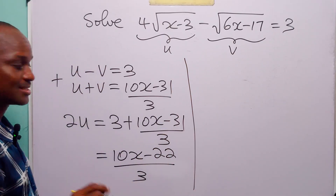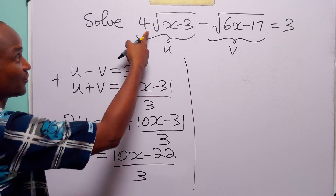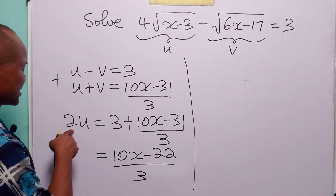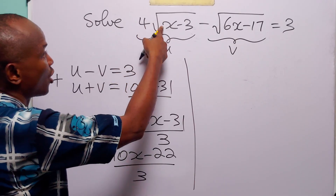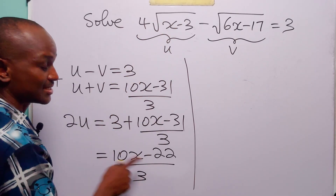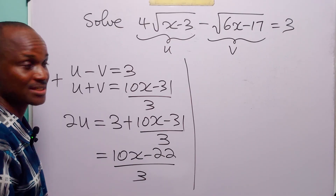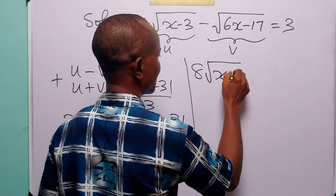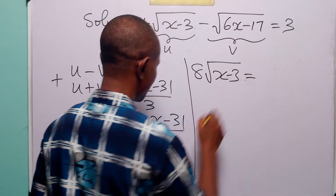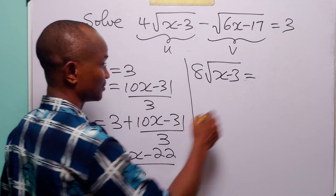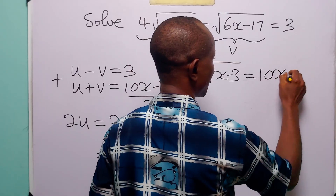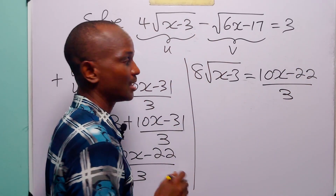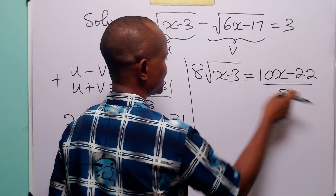Since u = 4√(x-3), we have 2 × 4√(x-3) = (10x-22)/3, that is 8√(x-3) = (10x-22)/3.